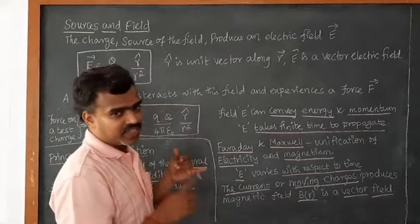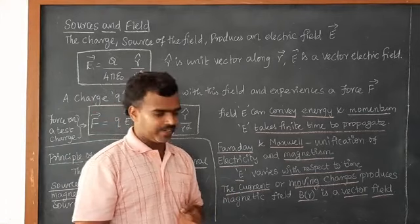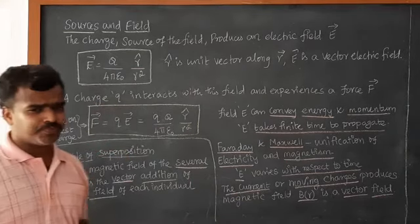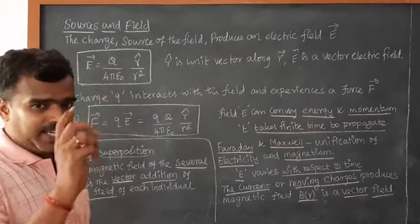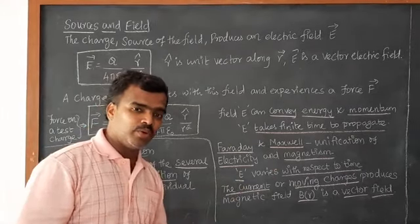So E is vector, F is vector, and the magnetic field B is also vector. And suppose here we are choosing one charge. Suppose if you have more number of charges, what we can do?